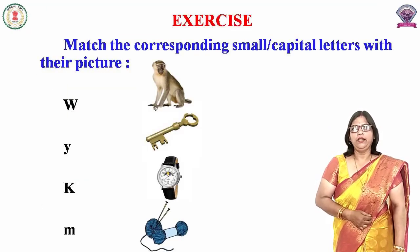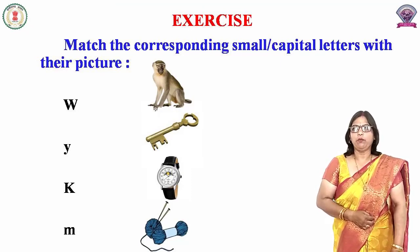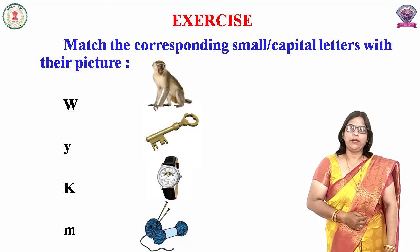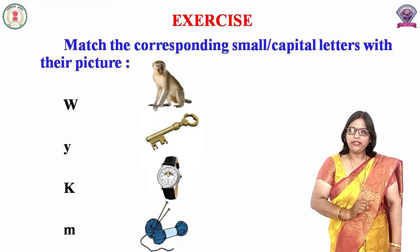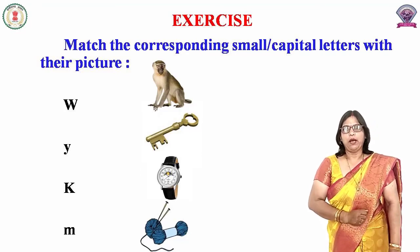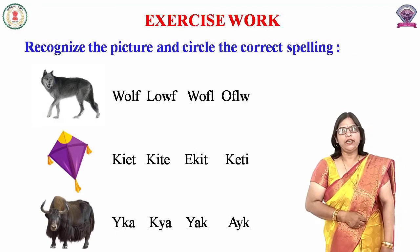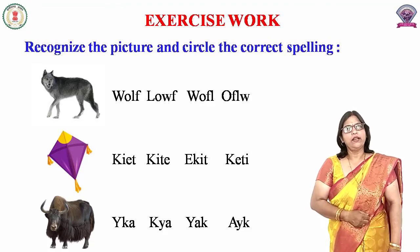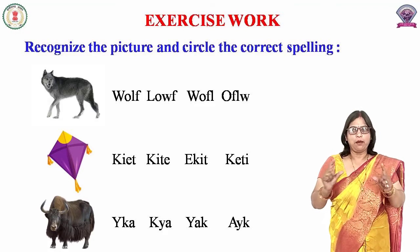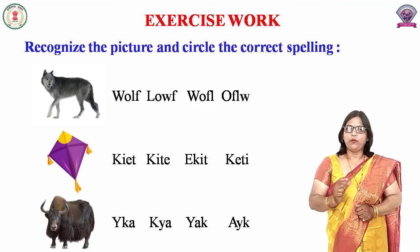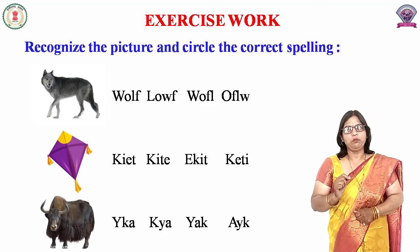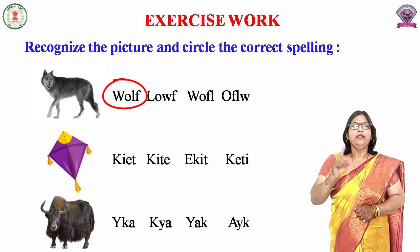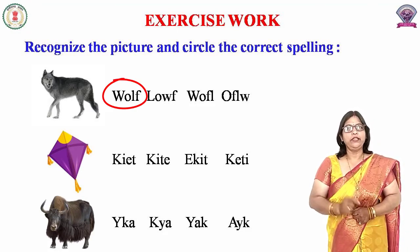अब हम देखते हैं exercise करना है। Match the corresponding small and capital letters with their pictures — यहाँ पर small और capital letters लिखे हुए हैं, सामने कुछ pictures बनी हुई हैं, तो आपको इन letters के साथ pictures को match करना है। Next exercise: Recognize the picture and circle the correct spelling — picture दी हुई है और उसके सामने तीन-चार spellings दी हुई हैं, जैसे wolf की picture के सामने wolf circle करना है।